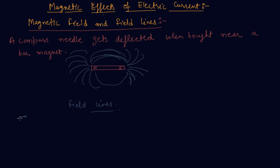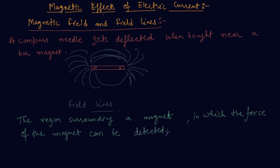The region surrounding a magnet in which the force of the magnet can be detected is said to have a magnetic field.